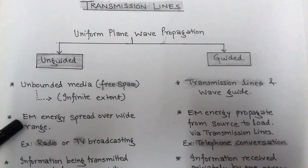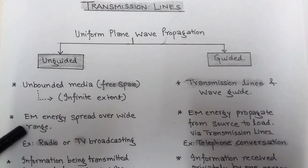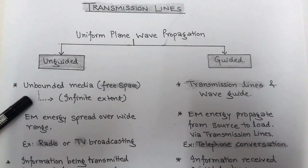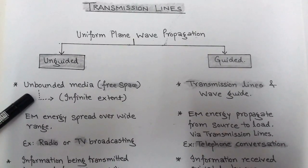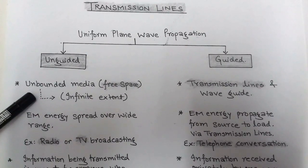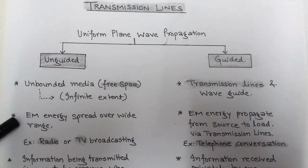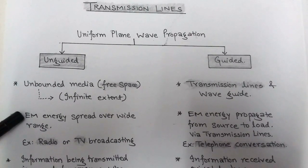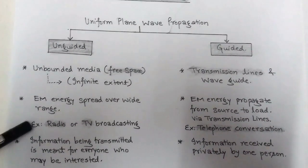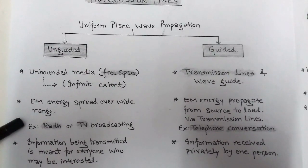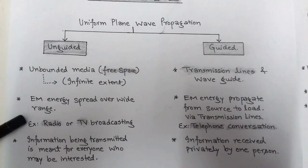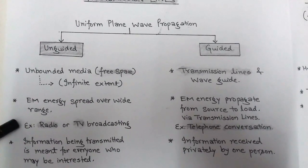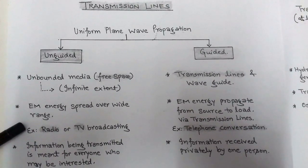In the case of unguided propagation, free space is used. This free space has infinite extent and is an unbounded medium. In free space, electromagnetic energy is spread over a wide range, and the information transmitted is meant for everyone who may be interested — for example, radio or TV broadcasting.